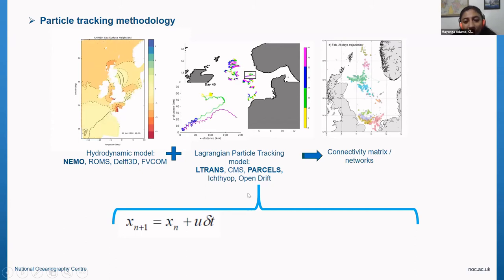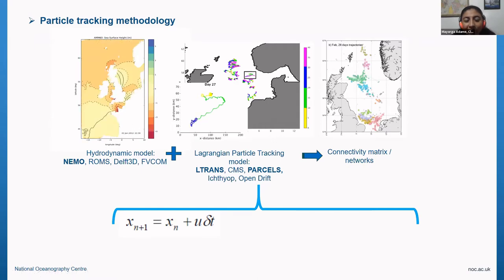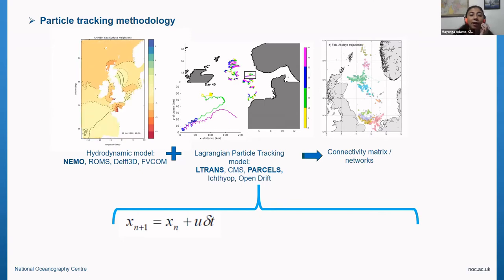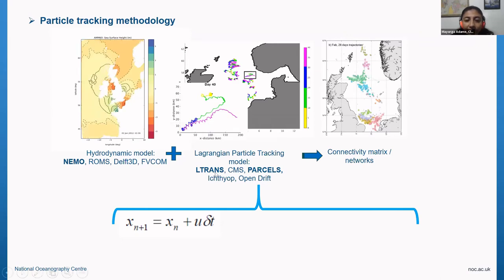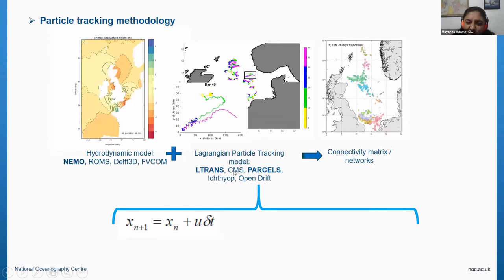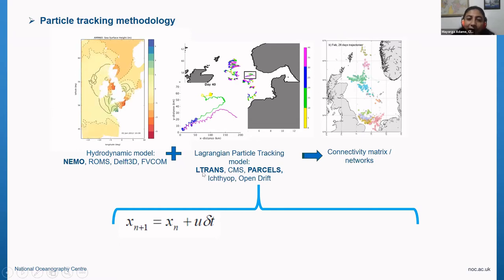On top of that, we need a Lagrangian particle tracking model — basically a tool that will calculate the trajectories of particles as they are pushed around by those velocity fields. We have a great variety of them for different purposes. LTRANS is for larvae, and CMS also, but it can also have oil applications or even sediment transport. Paracels is a generic tool, but it's developed by a group focusing on plastics.